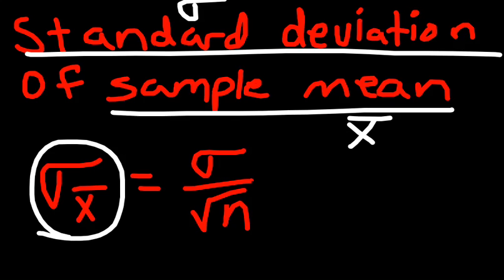And again, sigma is your population standard deviation, and n is the number that we're going to sample.